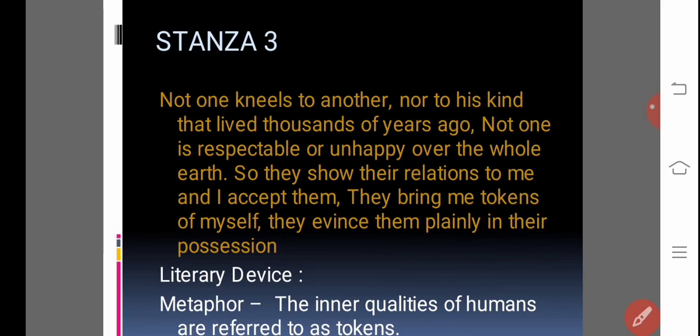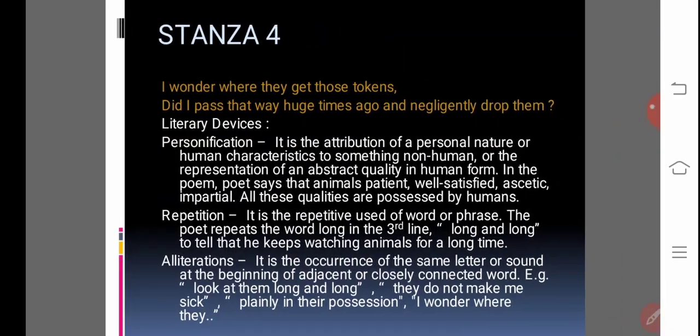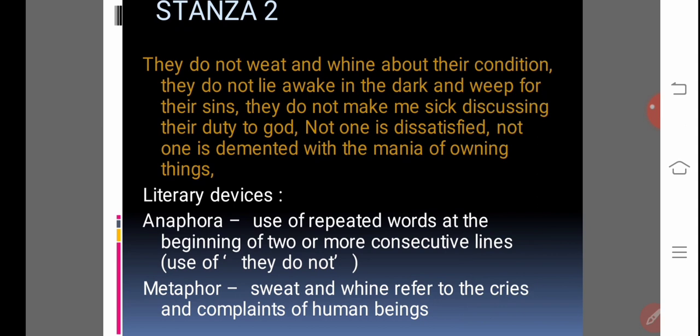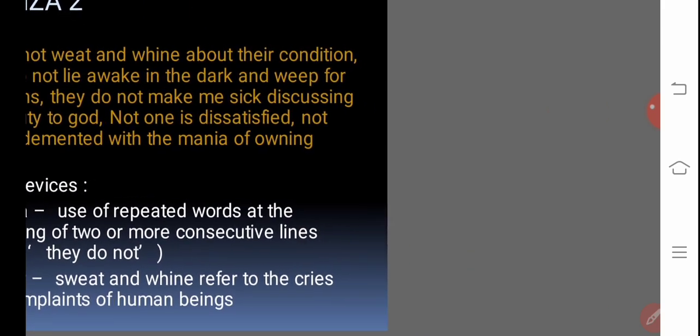Now we will go and see another stanza. Stanza number 2 is here. They do not sweat and whine about their condition. They do not lie awake in the dark and weep for their sins. They do not make me sick discussing their duty to God. Not one is dissatisfied. Not one is demented with the mania of owning things. You can see here, literary device used in this stanza is anaphora - use of repeated words at the beginning of two or more consecutive lines. That is they, they, they do not. Metaphor is used here - that is sweat and whine refer to the cries and complaints of human beings.